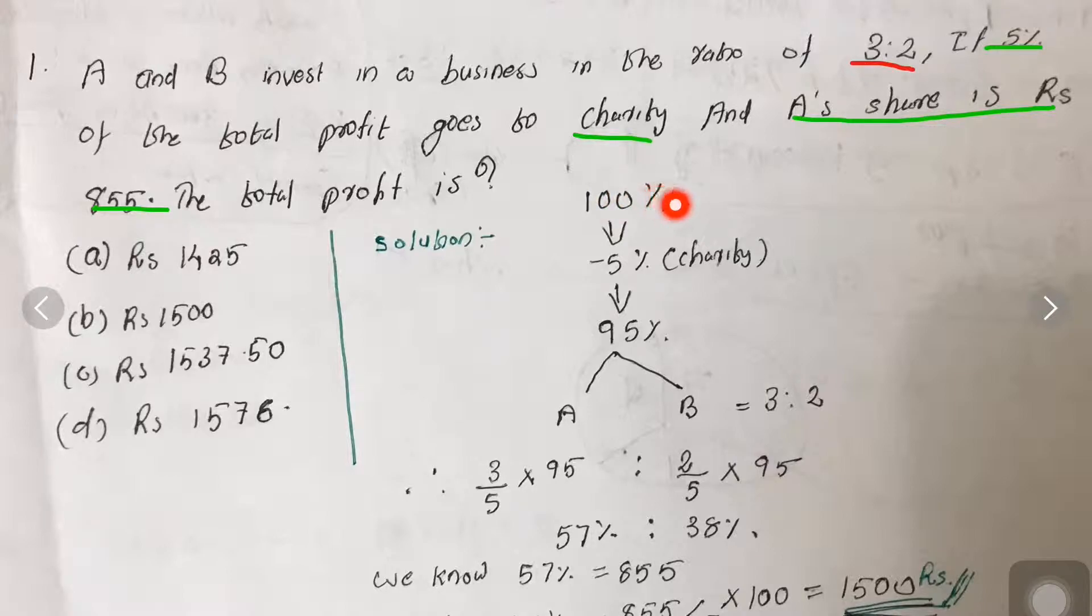First thing is 100% amount. From 100%, we see that 5% goes for charity. After 5% goes for charity, 95% is left. What is left as 95%, we have to give to A and B as their profit share.